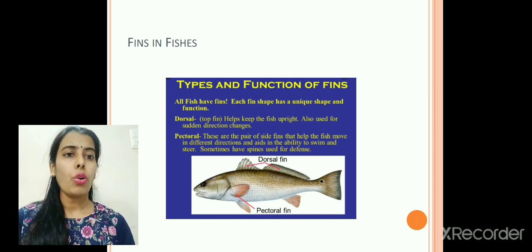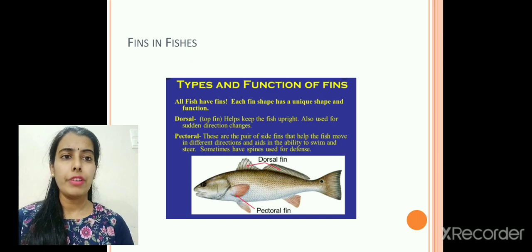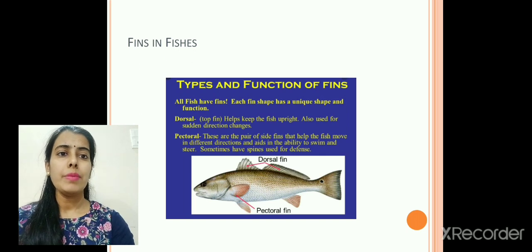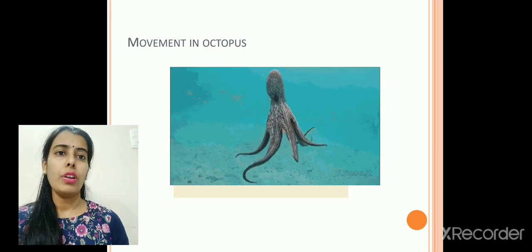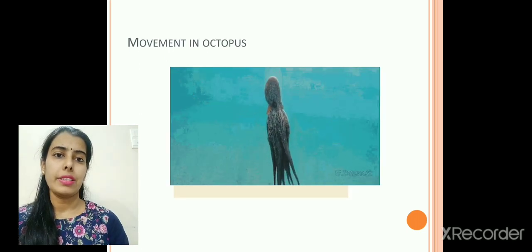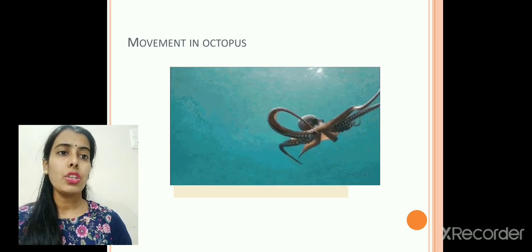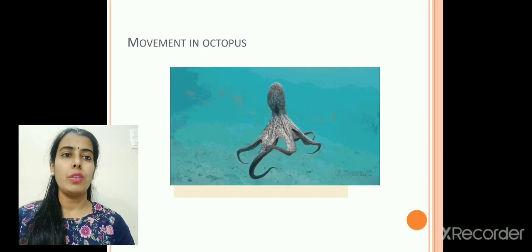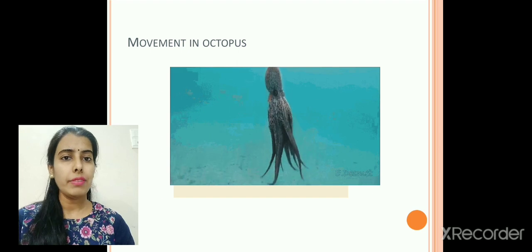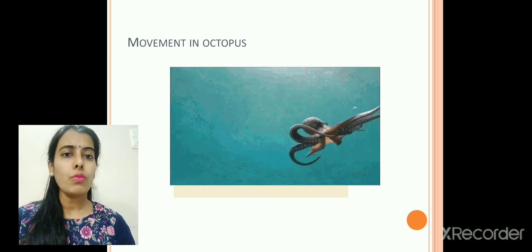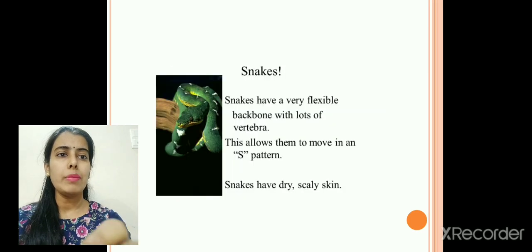The pectoral fins help the fish to move in different directions and to steer around in the water. Sometimes they also have spines for defense. Octopus, when it swims, acquires a streamlined shape — otherwise it is a different shape when resting, but when it swims in water it takes on a streamlined shape.